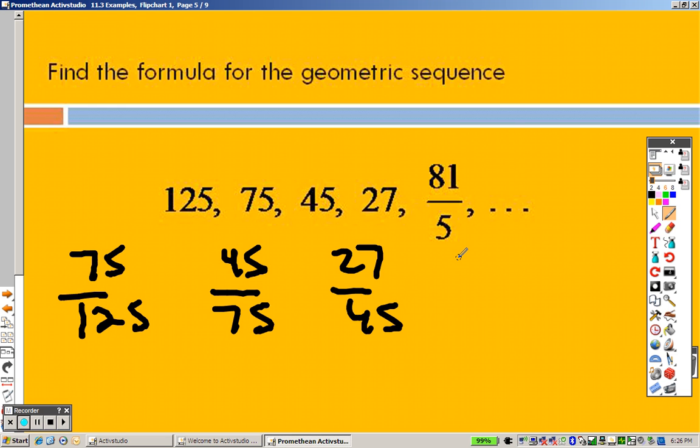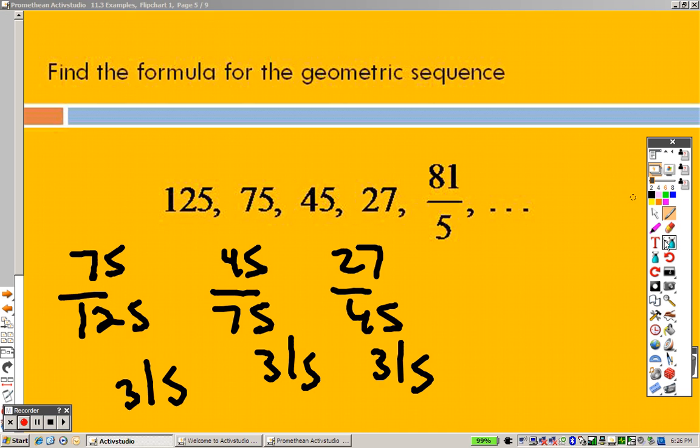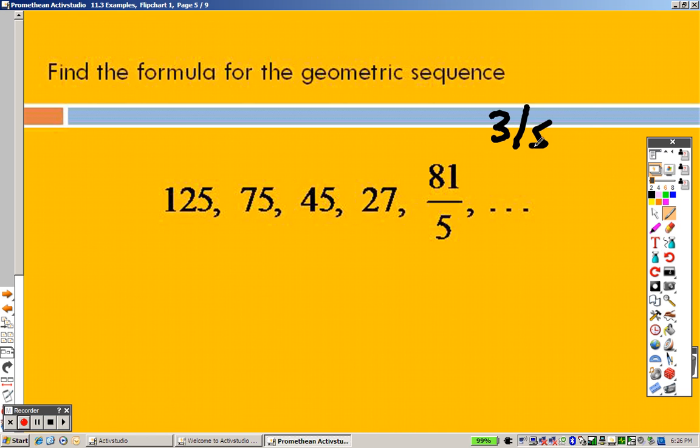45 divided by 75 gives you 3 fifths. And so does 27 divided by 45. So the point is, I get 3 fifths for every single one, so it is geometric.